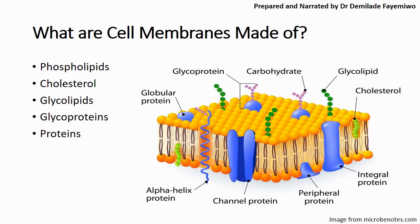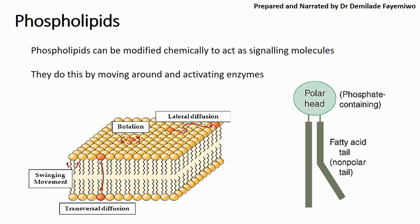Cell membranes are made up of phospholipids, cholesterol, glycolipids, glycoproteins, and other membrane proteins such as the channel and carrier proteins. Phospholipids can also be modified chemically to act as signaling molecules. Sometimes you have a glycolipid where a carbohydrate is attached to the phosphate head of the phospholipid, and what this carbohydrate does is act as a receptor to receive signals from other cells.